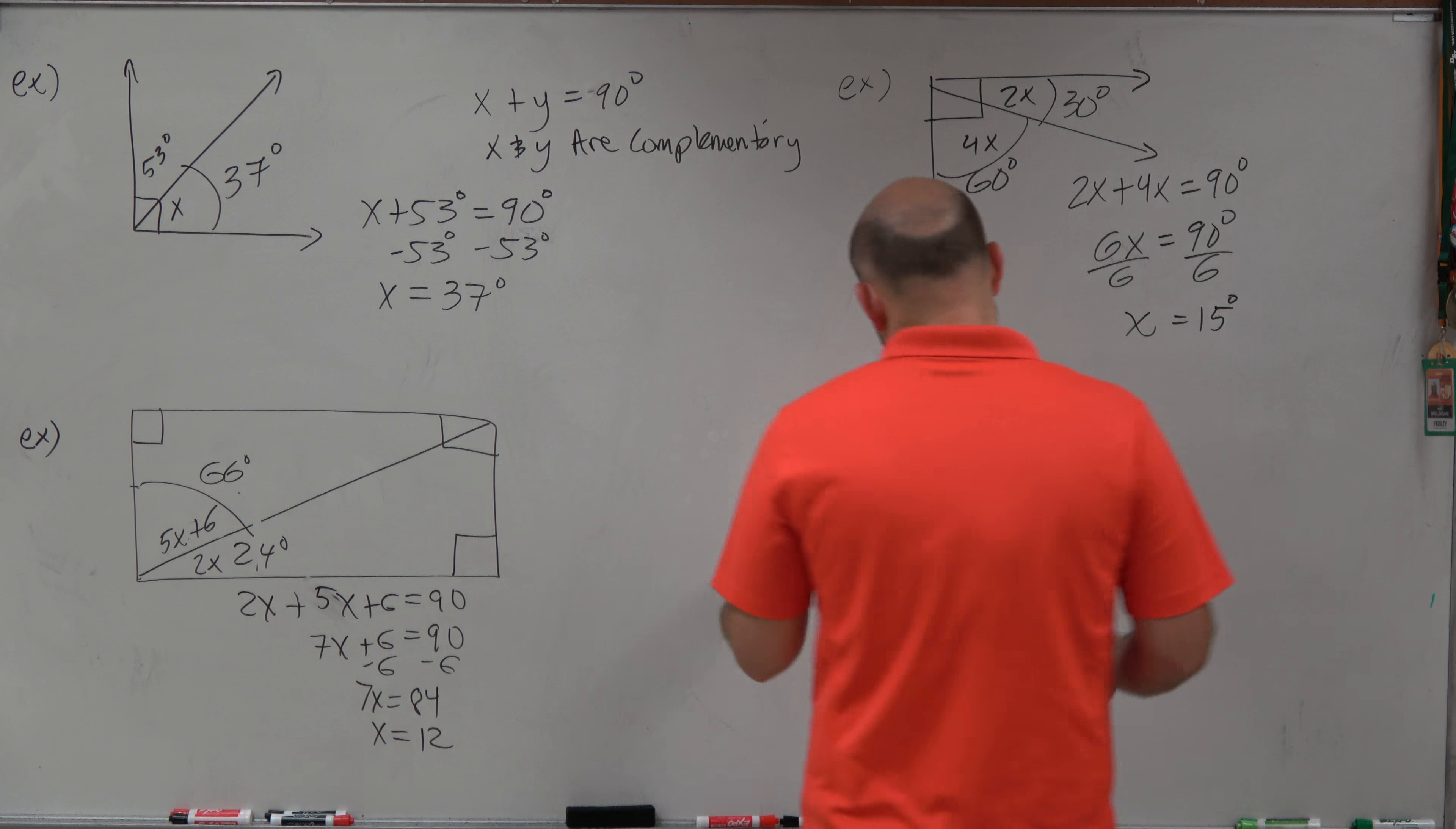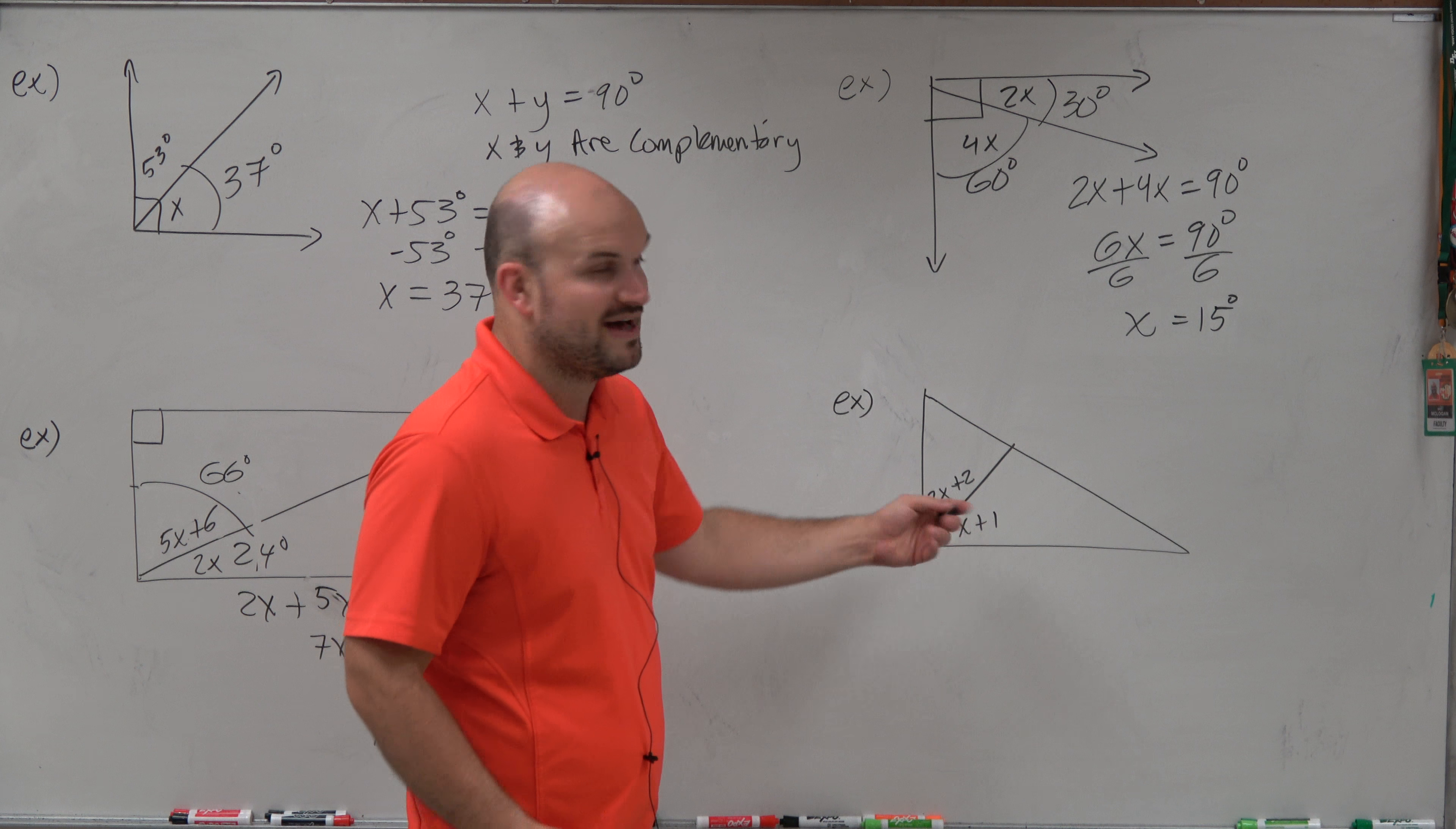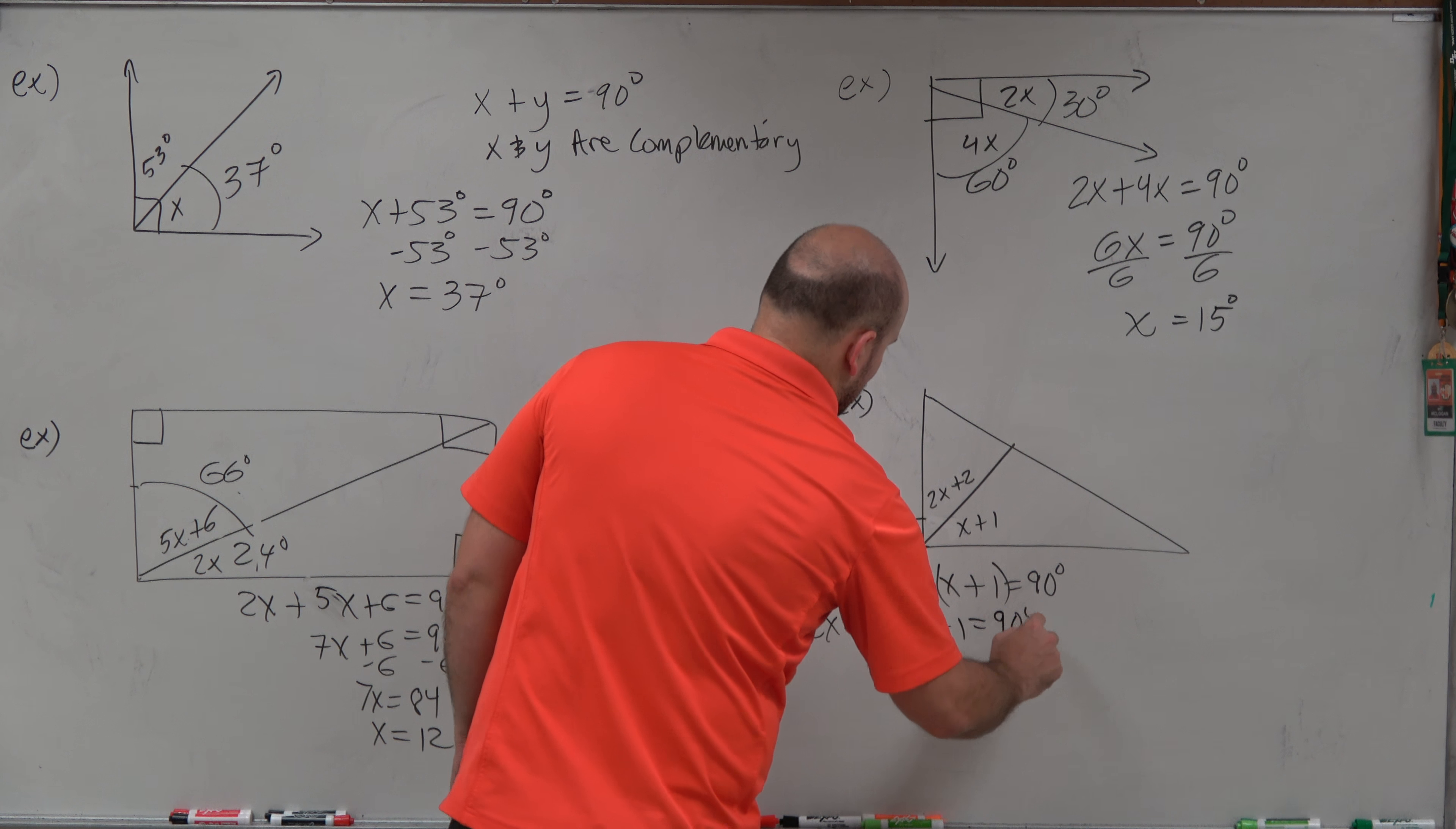The exact same thing over here. Here's another angle. It doesn't tell us what this angle is. But we do know on the other side here, we have a 90 degree angle. And since this makes a straight angle, we can show that then this has to be 90 degrees as well. So again, we have 90 degrees that's being split up. So therefore, those two angles are complementary. So to find those out, I'm just going to say 2x plus 2 plus x plus 1 equals 90 degrees. I could rearrange them so 2x plus x plus 2 plus 1 equals 90 degrees.